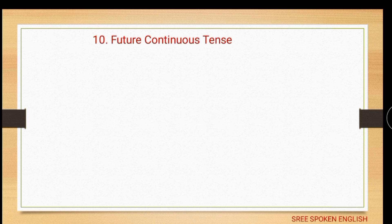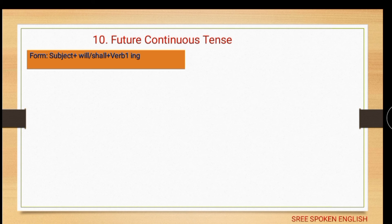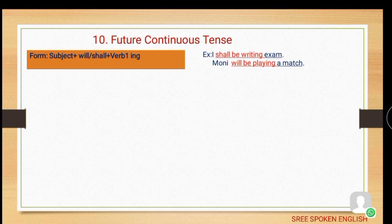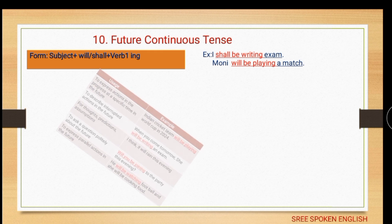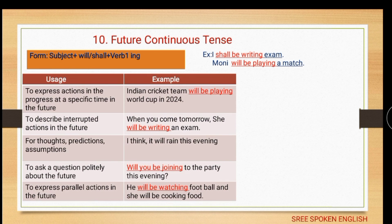The second subcategory of future tense: future continuous tense. The form is: subject + will/shall + be + verb first form in -ing form. Example: 'I shall be writing the exam.' Another example: 'Monty will be playing a match.'